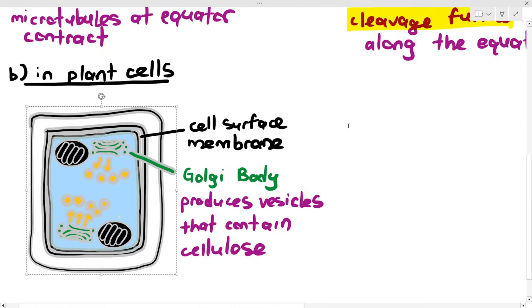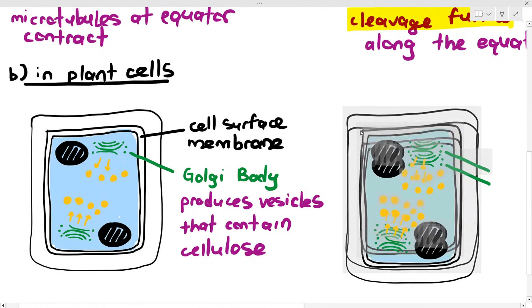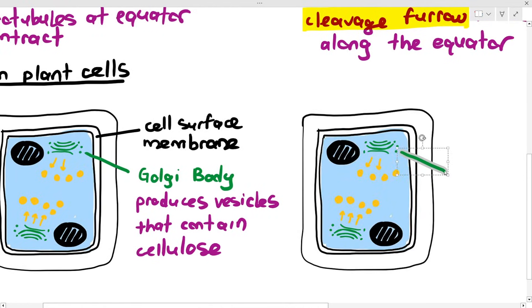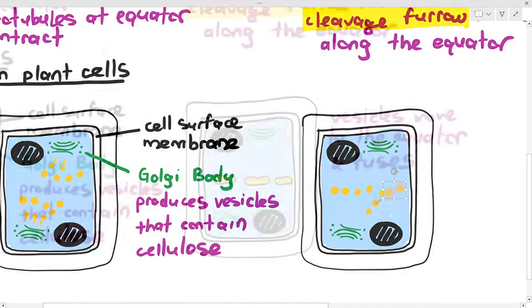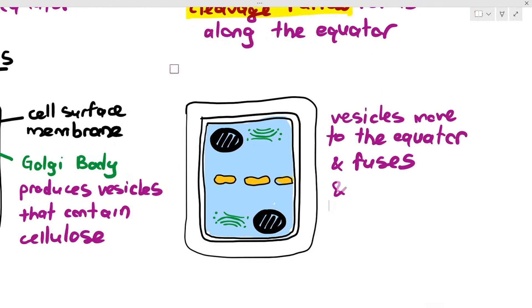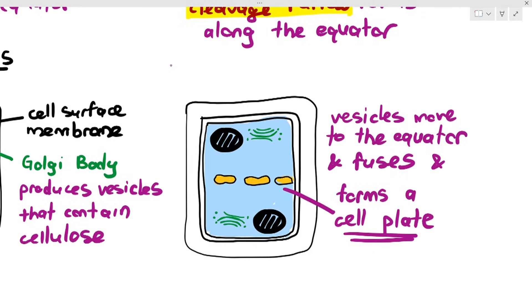Those vesicles will be transported towards the equator. The Golgi body produces vesicles that contain cellulose and the cellulose moves to the equator. Because vesicles are made out of membranes, the vesicles can fuse with each other. When those vesicles fuse with each other, it becomes this division in the equator known as the cell plate.